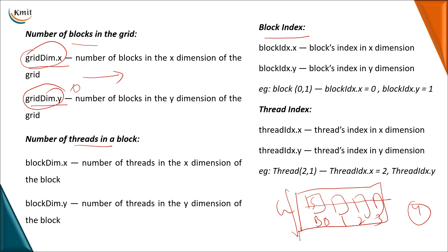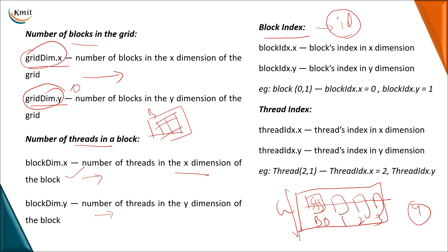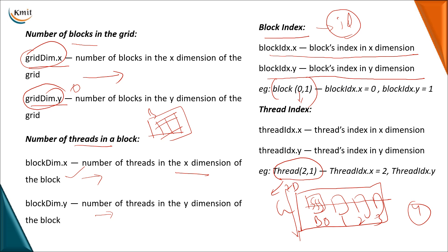Each block has multiple threads. You can organize threads in a block along only the X direction (one-dimensional) or in rows and columns (two-dimensional). blockDim.x gives the number of threads in the X direction and blockDim.y gives the number in the Y direction. Each block is given an ID: blockIdx.x gives the block index in the X direction and blockIdx.y in the Y direction. For a block represented as (0,1), blockIdx.x returns 0 and blockIdx.y returns 1. For a thread at position (2,1), threadIdx.x returns 2 and threadIdx.y returns 1.